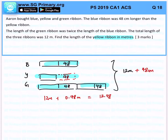Immediately, number of blue ribbons will be 12.48 divided by 4, and that will give me 3.12 meters.